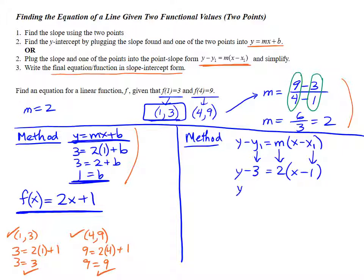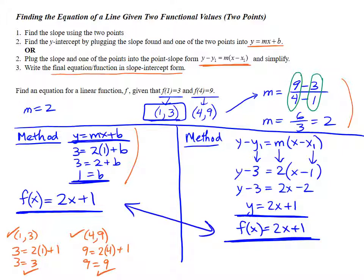Once I have that plugged in, I just simplify. y minus 3 equals distribute the 2, 2x minus 2, and then add the 3 to both sides. y equals 2x plus, well, negative 2 plus 3 is 1. Notice, same equation we had over here, we just need to write it in function form. So f of x equals 2x plus 1, same answer that we got both ways. If I hadn't already checked this answer, I would go ahead and check it with both points. But, as you can see, we've already done that. It does work.